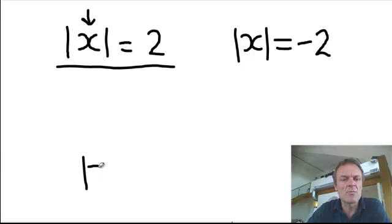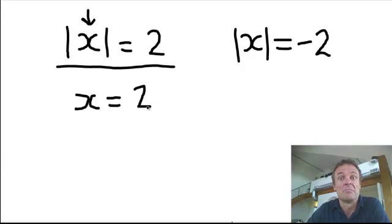how you set up the absolute value equations is this. You just do this: x, without the absolute sign, is equal to 2, but also, x is equal to negative 2.